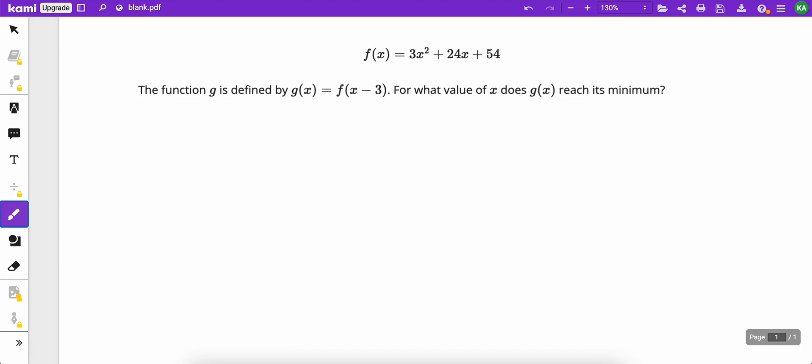They give us f of x and then they tell us that g of x is f of x minus 3. Don't worry if you don't know what that means. Just go to Desmos and type these in exactly as you see them.